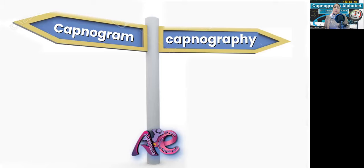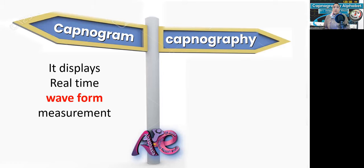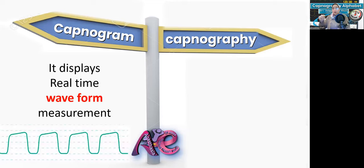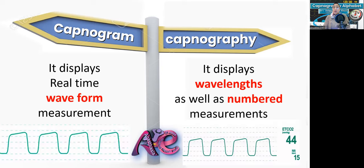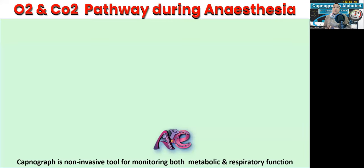What is the difference between a capnogram and capnography? A capnogram displays a real-time waveform measurement only — when we see only a waveform, this is a capnogram. Capnography, however, displays both waveform and numerical measurement — it gives us a waveform plus a number. So: waveform only = capnogram; waveform plus number = capnography.